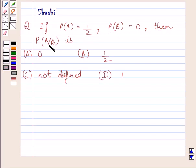then probability of A upon B is: A, 0; B, 1 upon 2; C, not defined; D, 1.